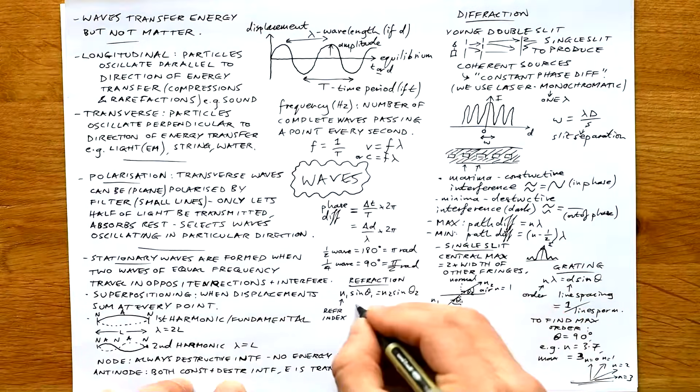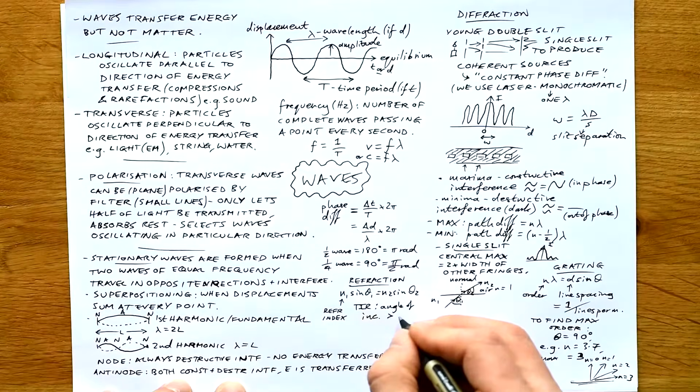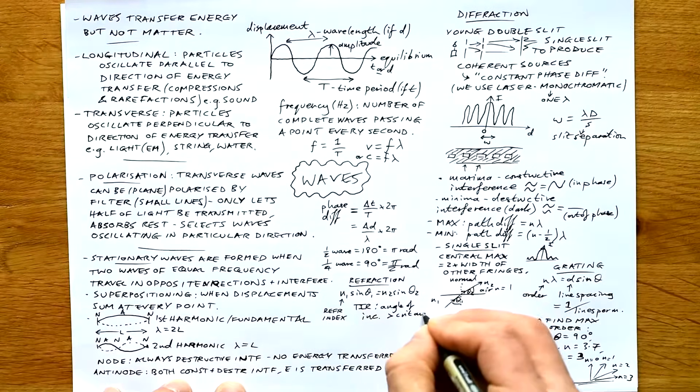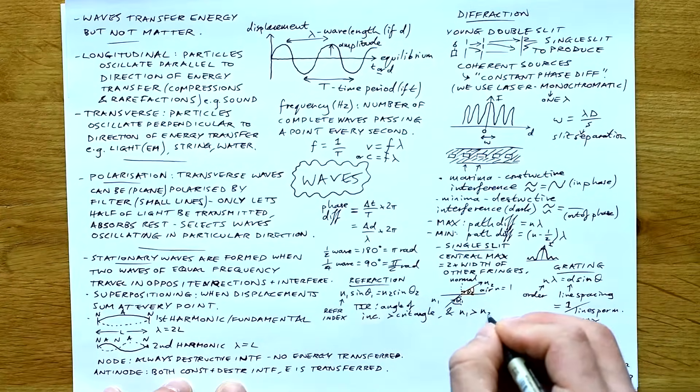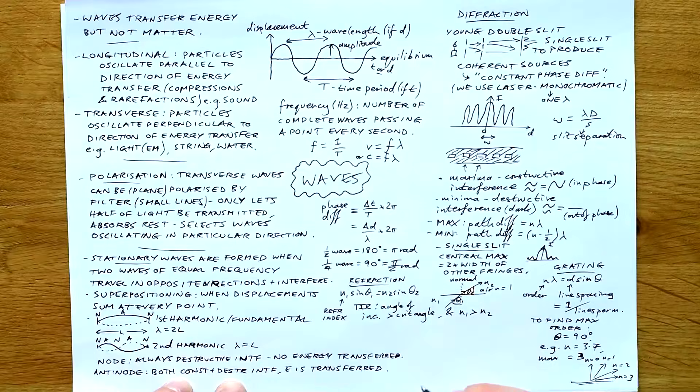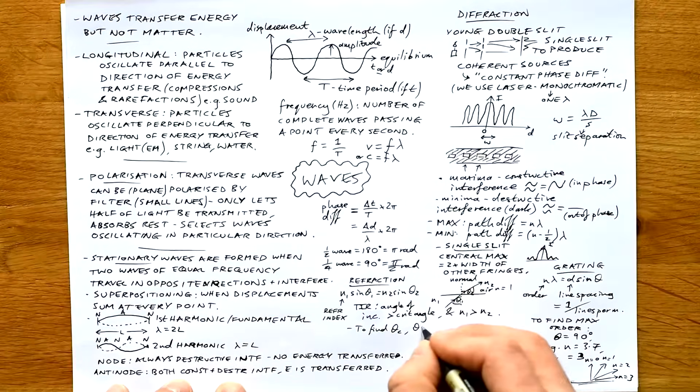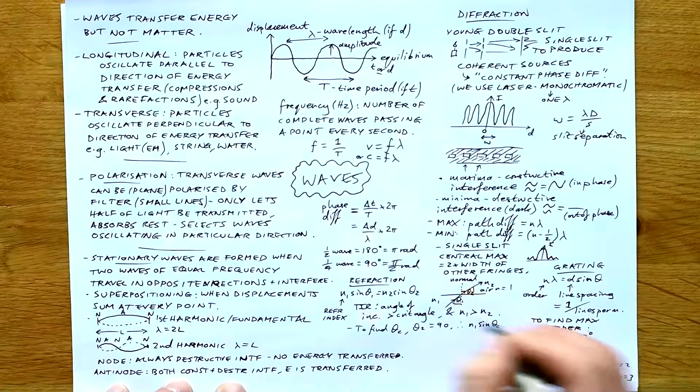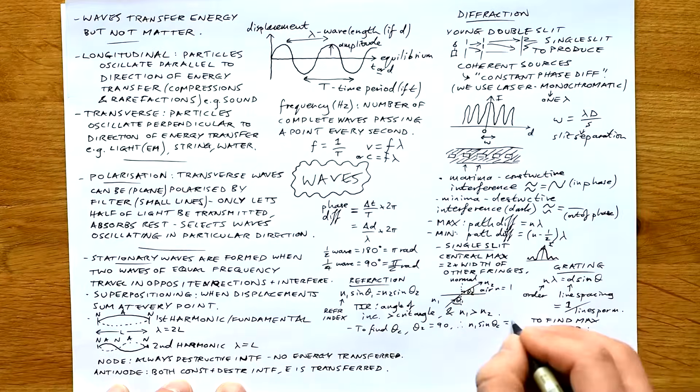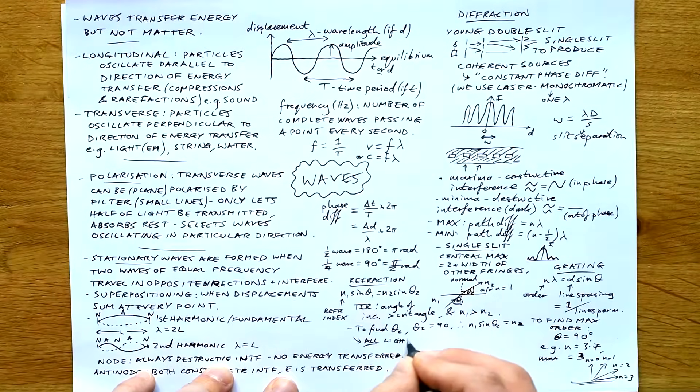For TIR to occur, the angle of incidence must be greater than the critical angle, and also the refractive index of this medium must be greater than the second medium, otherwise it doesn't work. To find the critical angle, we make theta 2 equal to 90 degrees. Therefore n1 sine theta c, because that's what we're talking about, is the angle of incidence, just equal to n2. TIR is when all light is reflected, because we always get a partial reflection, but not with TIR.